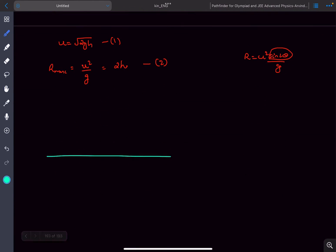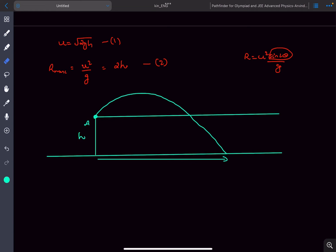Now this sprinkler is elevated by a height h. If this is the ground, this is where the sprinkler is kept now. If I draw a horizontal line here, we need to first find the maximum value of this range r.